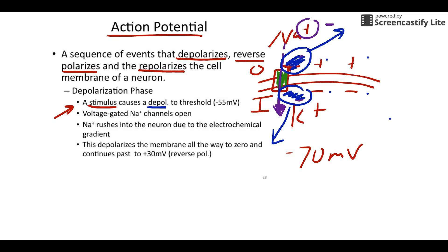When we hit negative 55, which is what we call threshold — a number you do need to know, just like negative 70 is important — when we hit negative 55, sodium doors open and sodium is going to come rushing in. Not just a little bit like the stimulus let in, but all the sodium doors pop open and lots of sodium rushes in.